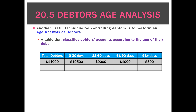So that's a total of $14,000. What we do with an age analysis is we express every number as a percentage of the total. So if $14,000 is 100%, we would express $10,500 as a percentage of $14,000, and we can see that 75% of all debtors are due within 0 to 30 days. Then 14.3% of debtors have been outstanding for 31 to 60 days, 7.1% for 61 to 90 days, and 3.6% of our debtors are at least three months or 91 days old.